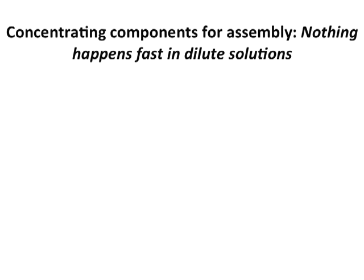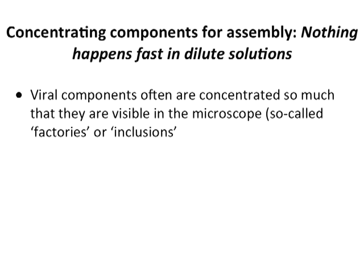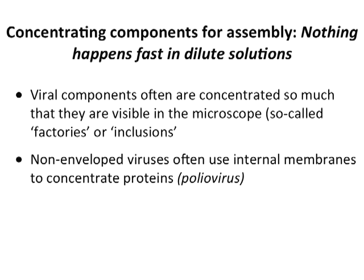A key aspect of assembly is that nothing happens fast in dilute solutions. Things always have to be concentrated, and that's what viruses do in cells. They maintain their crucial components highly concentrated so that they assemble quickly. They are often visible in the microscope as concentrations of viral assembly products, which for different viruses are characteristic of infection — we call these factories or inclusions. Internal membranes can also be used to concentrate proteins, as with poliovirus concentrating its replication machinery on vesicles.